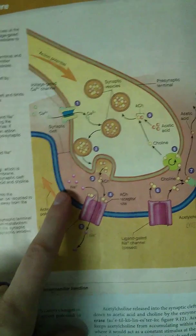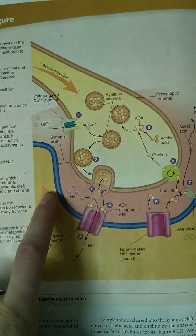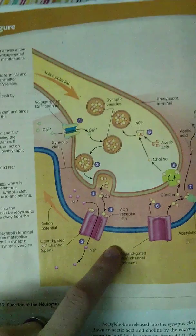Now these channels here in the postsynaptic terminal, which is usually the muscle, hence the neuromuscular junction, these are ligand-gated channels,